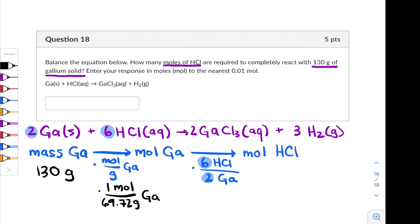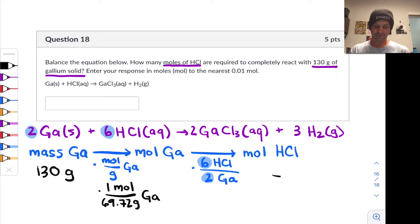All right, so after following all this math, I ended up with 5.59 moles of HCl required to fully consume that given mass of gallium. And as a sanity check here, does this seem about right? Well, yeah, we've got a little bit less than 2 moles of gallium in this 130 gram sample. And so it's going to take a little bit less than 6 moles of HCl to fully consume that amount.